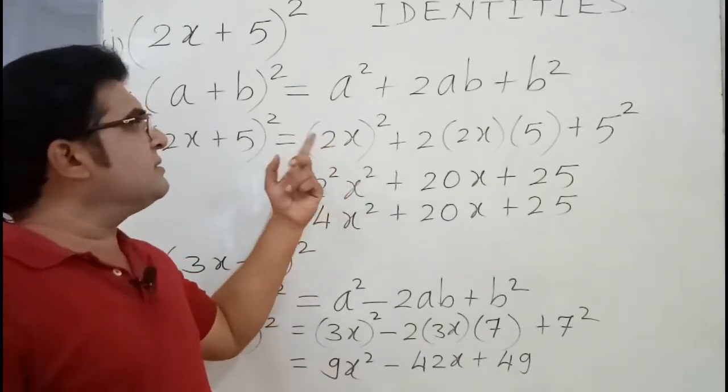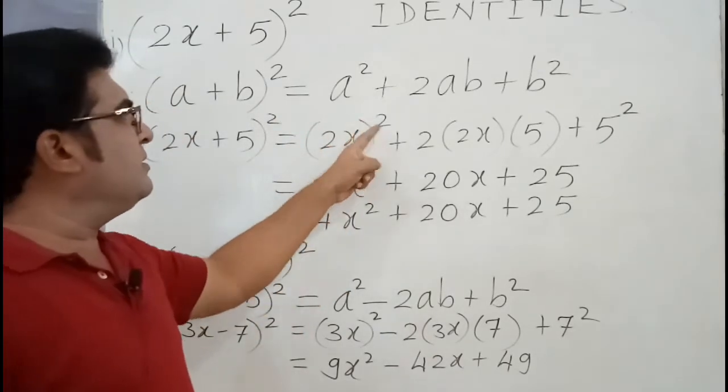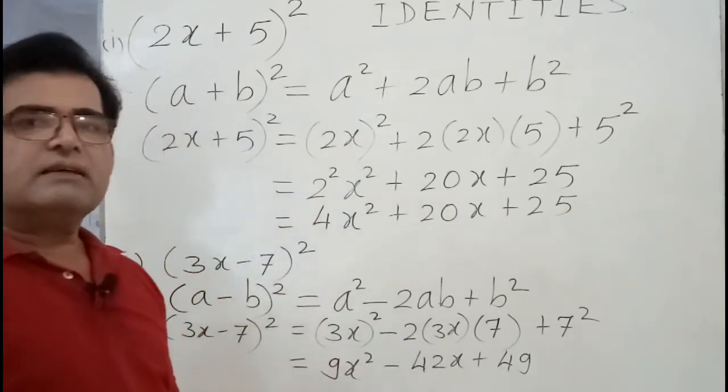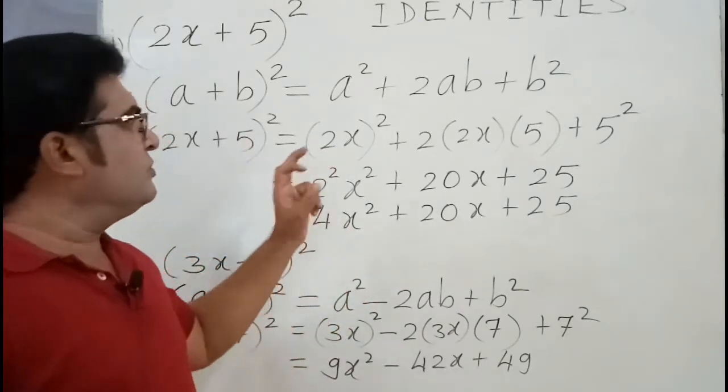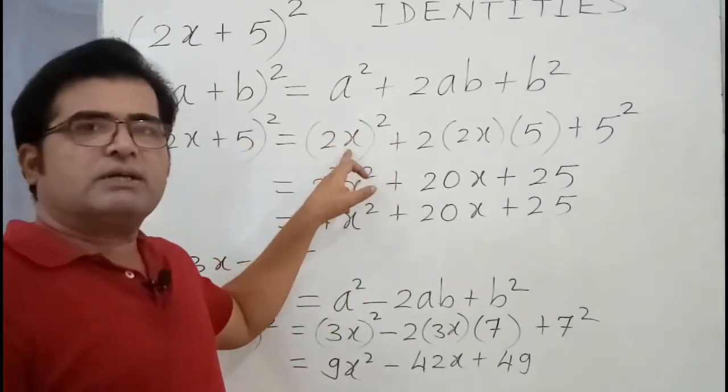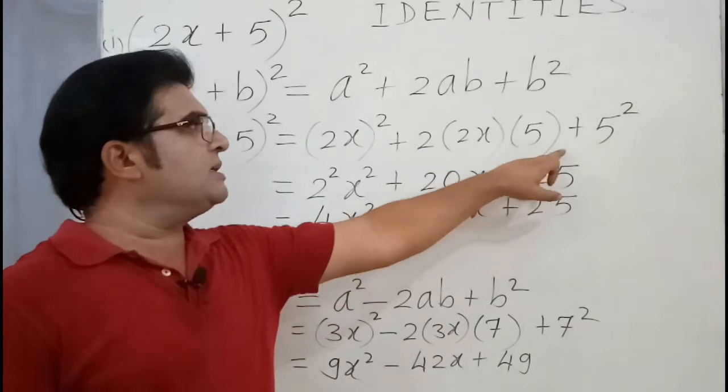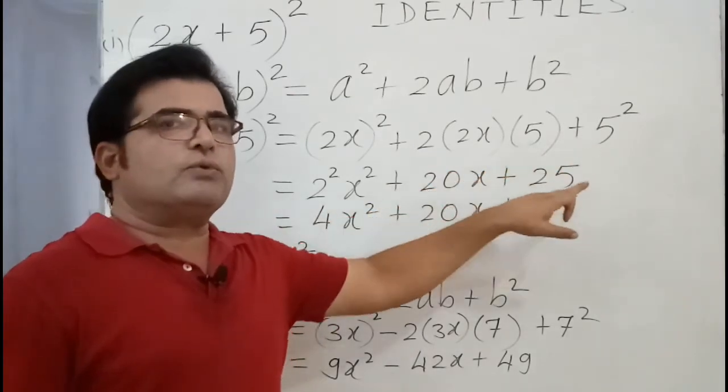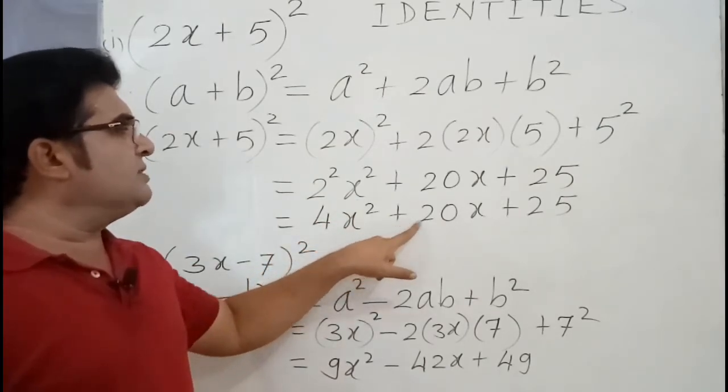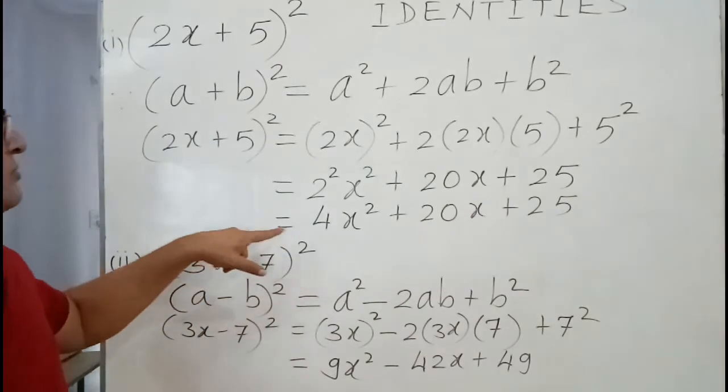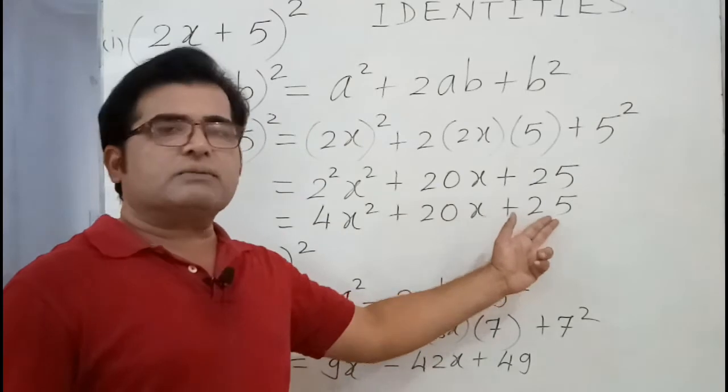But when 2x, 3x, 4y like that given then you have to put the bracket, inside the bracket then it will be square for both the numbers. After putting the values you have to simplify it. (2x)² is 2²x² = 4x², plus 2·2·5 = 20x, plus 5² is 25. Then 2² becomes 4 so it is 4x² + 20x + 25 is your answer.